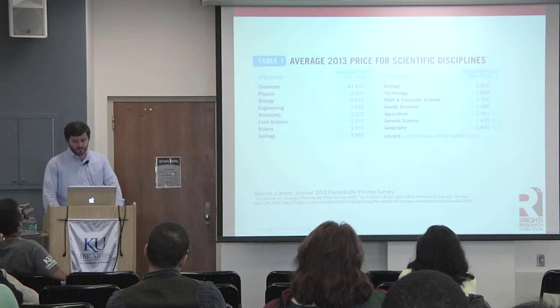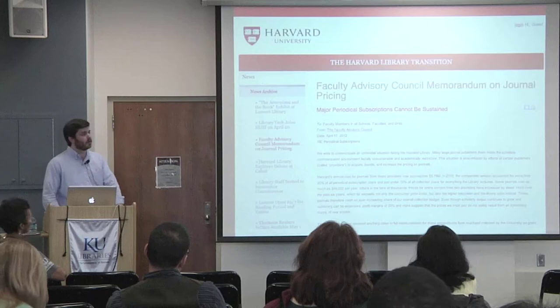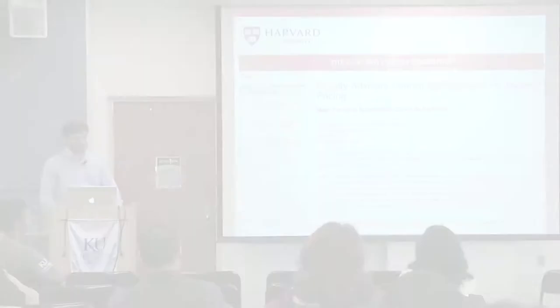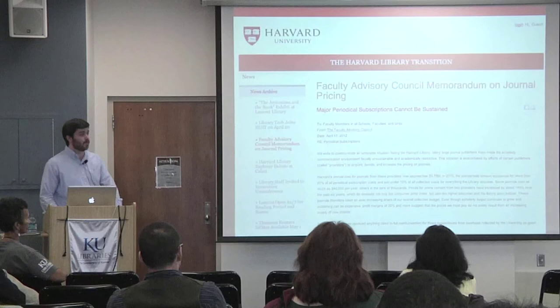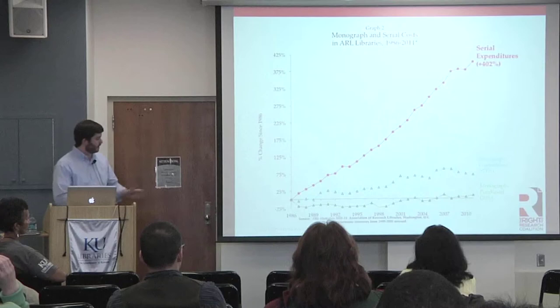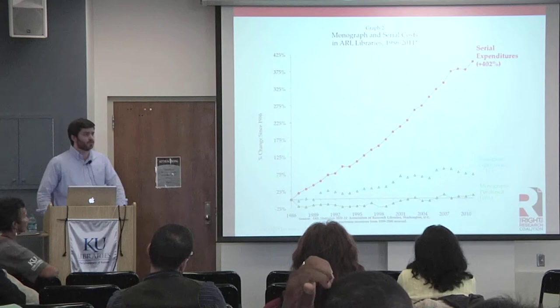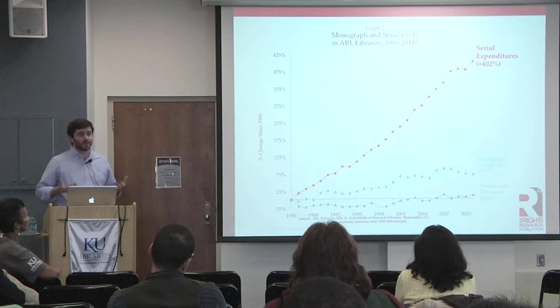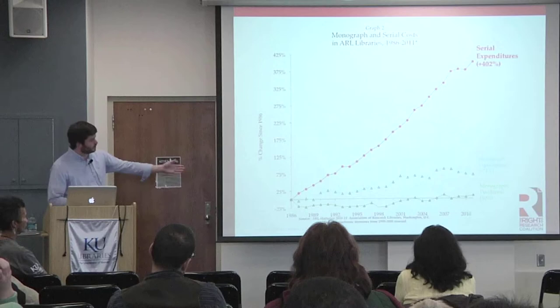These academic journals have gotten so expensive that even Harvard can't afford access to all the journals their researchers and students need. This is a memo their library put out last year in April talking about how they're going to have to cancel some institutional subscriptions because prices were increasing too quickly. This is a trend that's continued over the last 20 to 30 years. This graph from the Association of Research Libraries shows we're spending about 400% more on journal subscriptions from 1986 through 2010.